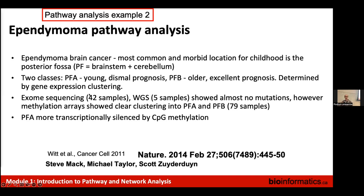Gene expression analysis identified two classes of the disease: previously, everybody thought if the tumor is in the back of the brain it's bad, but it turns out there are two types — one affecting the youngest individuals with terrible outcomes, and another affecting older children with excellent outcomes, determined purely by gene expression clustering. We wanted to find out more about the genetics, so we searched for mutations with whole-exome and whole-genome sequencing, but found essentially no mutations. Pediatric cancers actually have a much lower mutation burden than adult cancers.